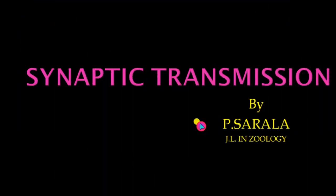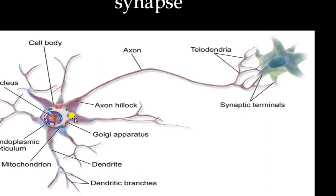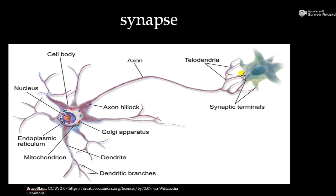Welcome to another class. In this class we are going to learn about synaptic transmission. Synaptic transmission is about how the nerve impulse is conducted from one neuron to another neuron. This is one neuron — you all know the structure of the neuron — this is the cell body and this is the axon of the neuron. The nerve impulse travels through the axon and comes to the teledendrites.